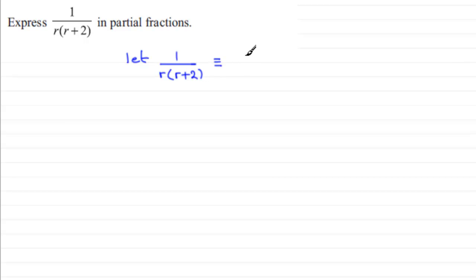When you get a linear factor you always have fractions of the form a constant which you can give as any letter you like. I'm going to call it A and you divide it by each of those linear factors. So you've got A divided by r and then you've got plus another constant which you might as well call B and we divide that by the other linear factor r plus 2.